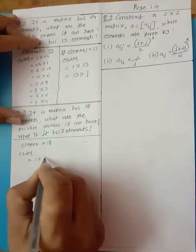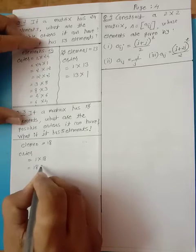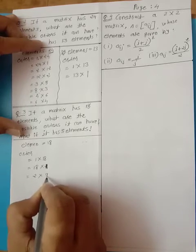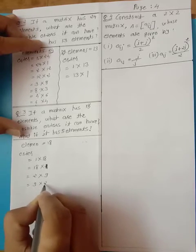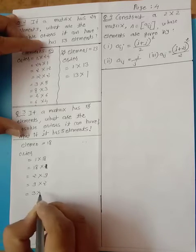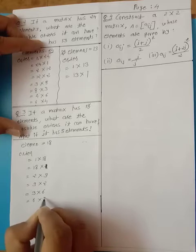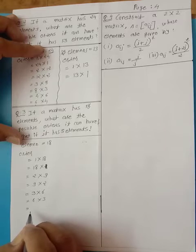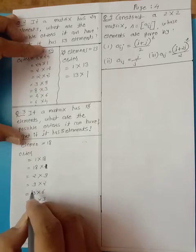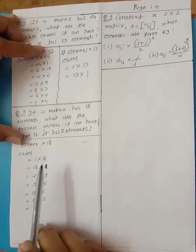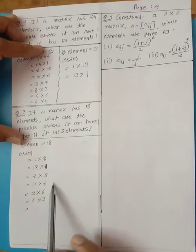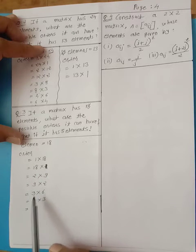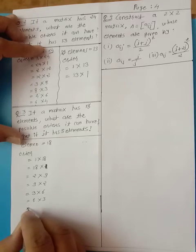First decide with 1: so 1×18, or 18×1. Then 2: 2×9 or 9×2. With 3: 3×6 or 6×3. With 4 — not possible. With 5 — not possible. 6 is done. 7 — no. 9 is done. 10 — no. So the possible orders are: 1×18, 18×1, 2×9, 9×2, 3×6, 6×3 — these many orders of matrix can be formed.